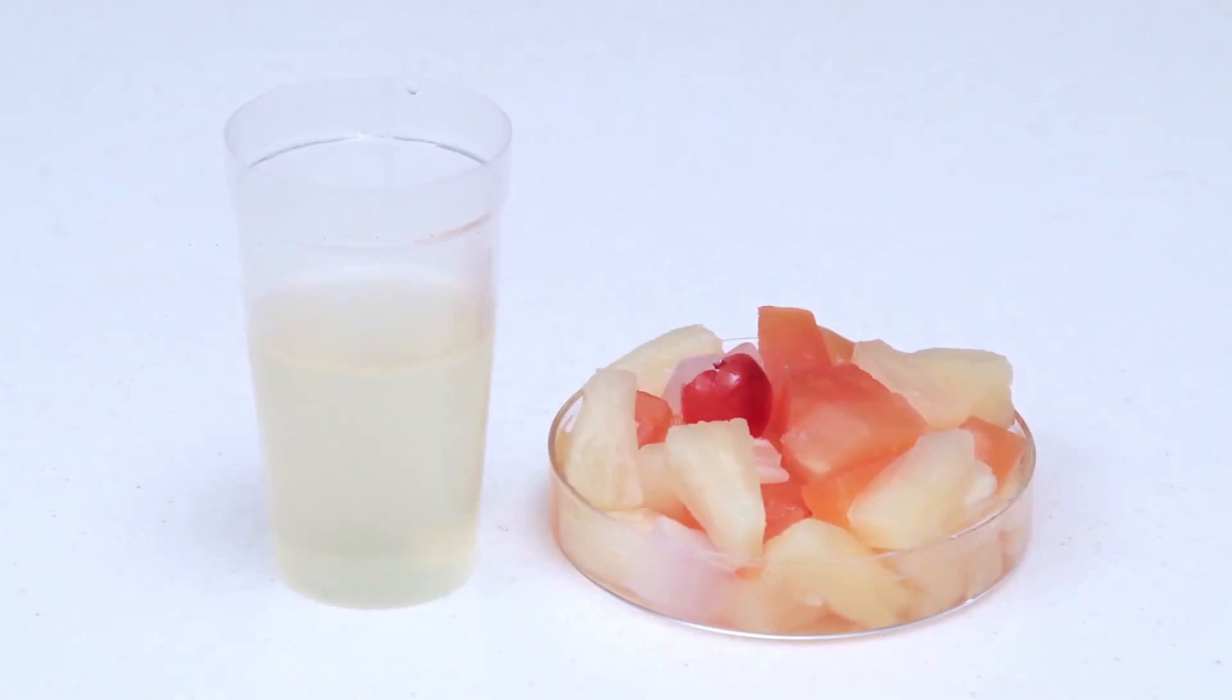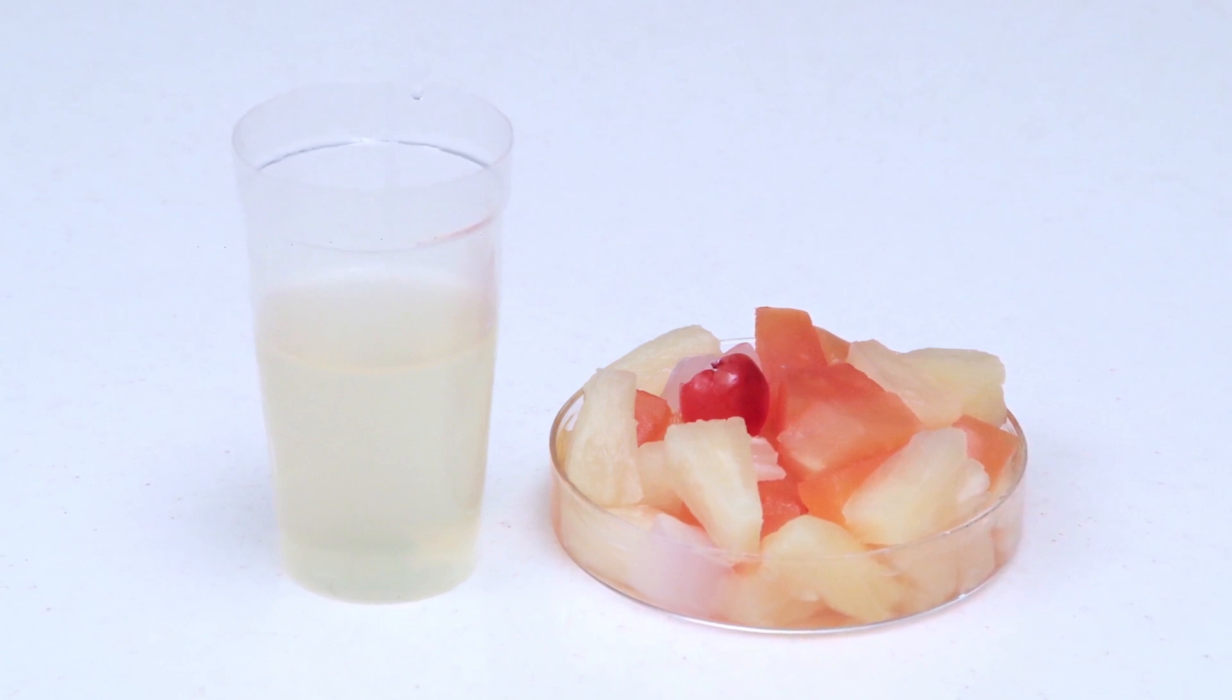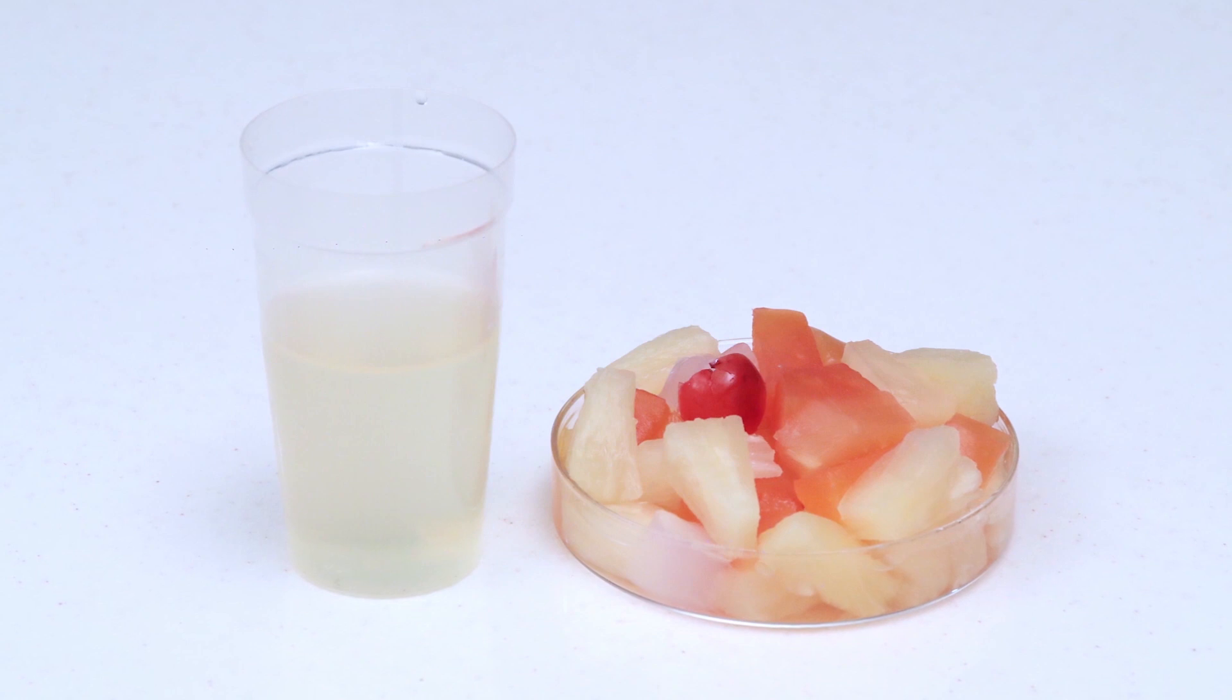A typical canned food consists of a mixture of liquid brine and solid food. The section 114.90 of 21 CFR recommends to measure the pH of solid and liquid brine separately.